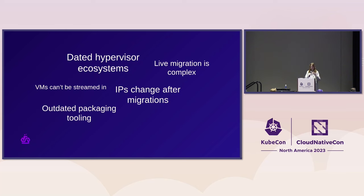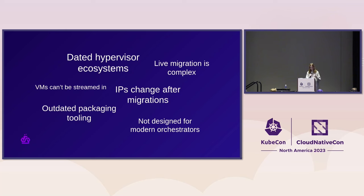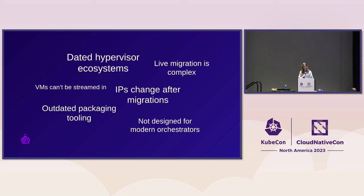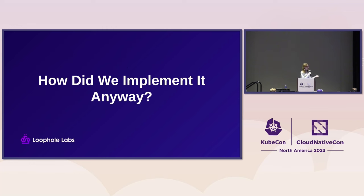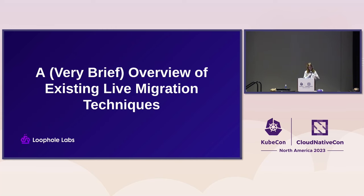Packaging is also a mess — there's no Dockerfile equivalent for virtual machines, and it generally doesn't integrate well with modern orchestrators. Solutions like KubeVirt take existing technology and port it over to Kubernetes, rather than being developed after Kubernetes actually existed and fixed the orchestration problems. So we're going to give you a very short overview of existing live migration techniques before explaining how we actually did it.